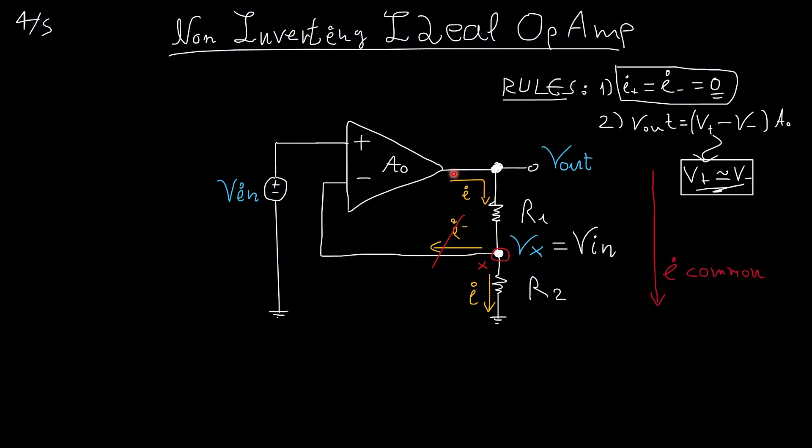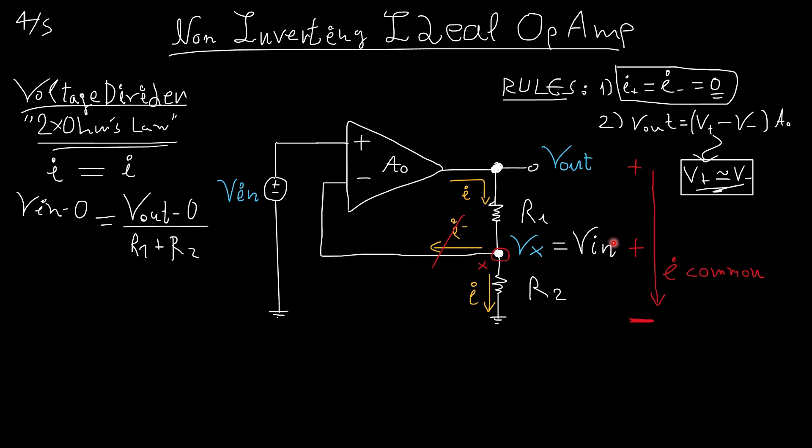I notice that the current is common all the way to here. So what I have here is actually a voltage divider from circuit theory, if you remember. The voltage here to here, which is Vout, minus 0, over the total resistance, which is R1 plus R2, must be equal to the voltage from here to here, which is Vin minus 0, over the total resistance from here to here, which is R2. Now, if we shuffle things around, we get Vout over Vin is equal to R1 plus R2 over R2.